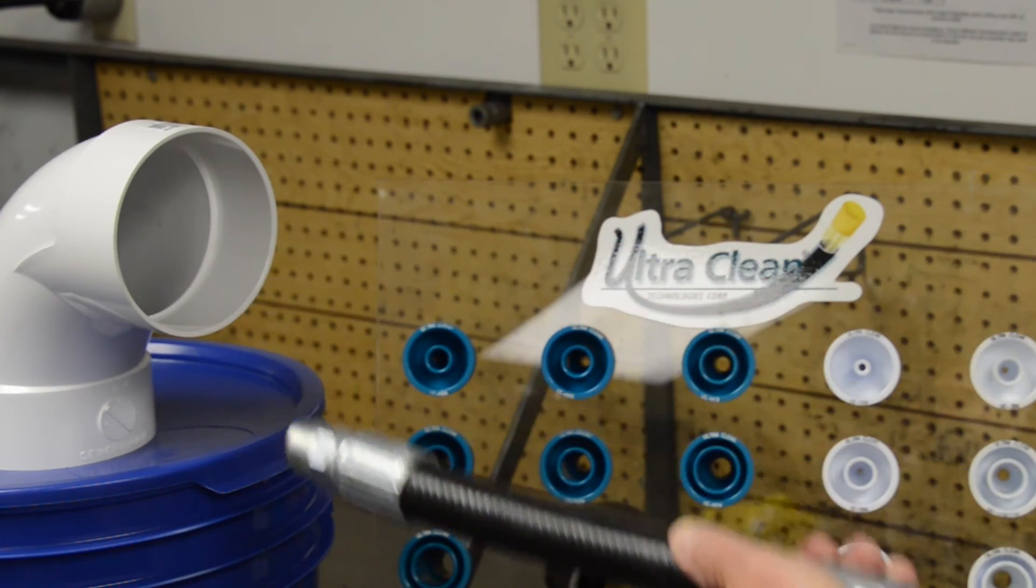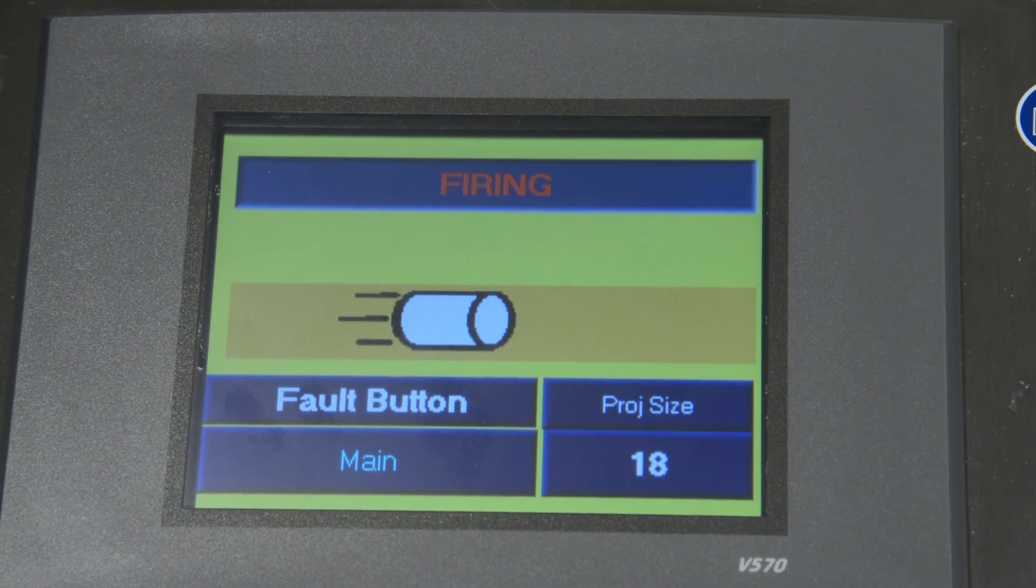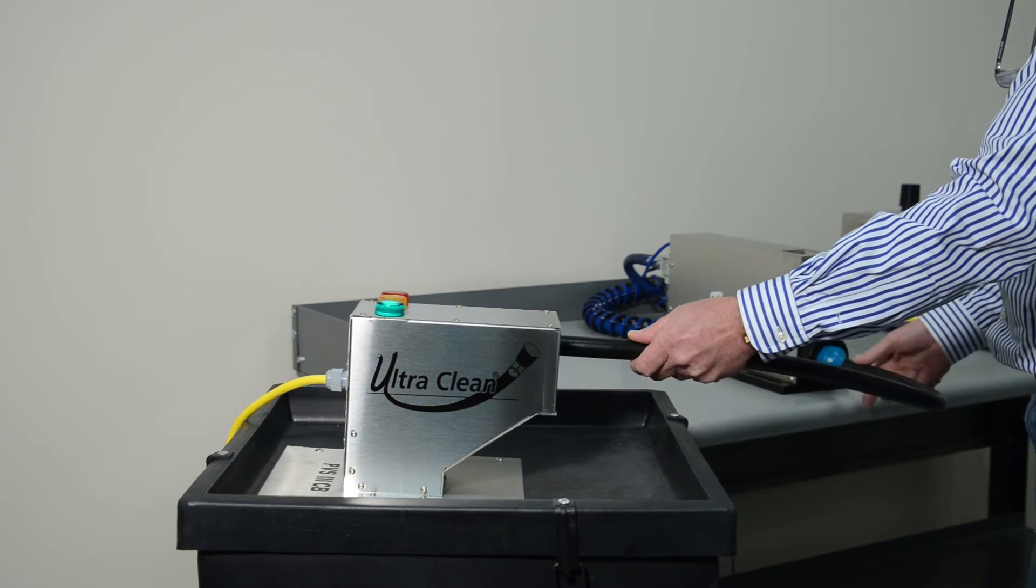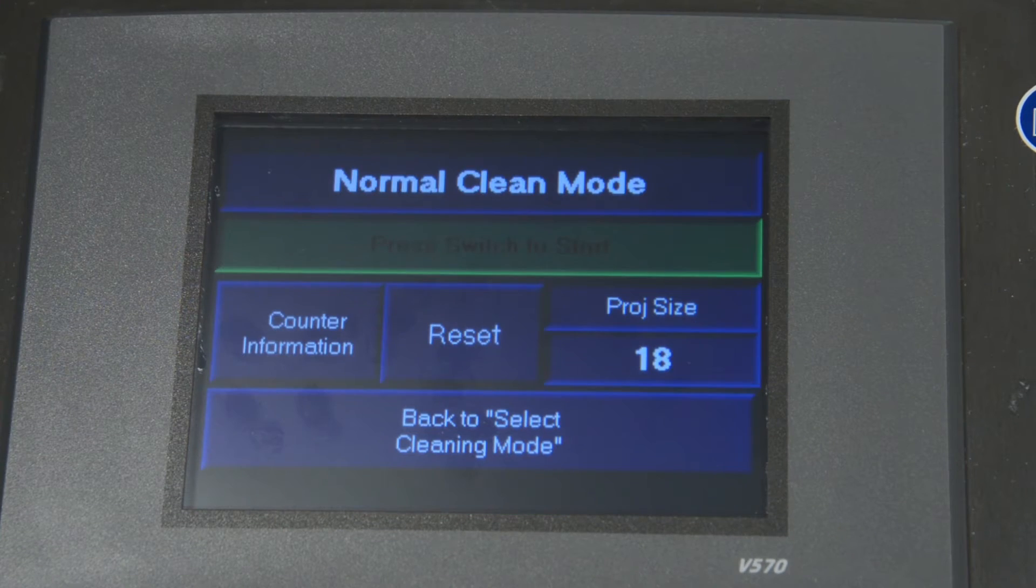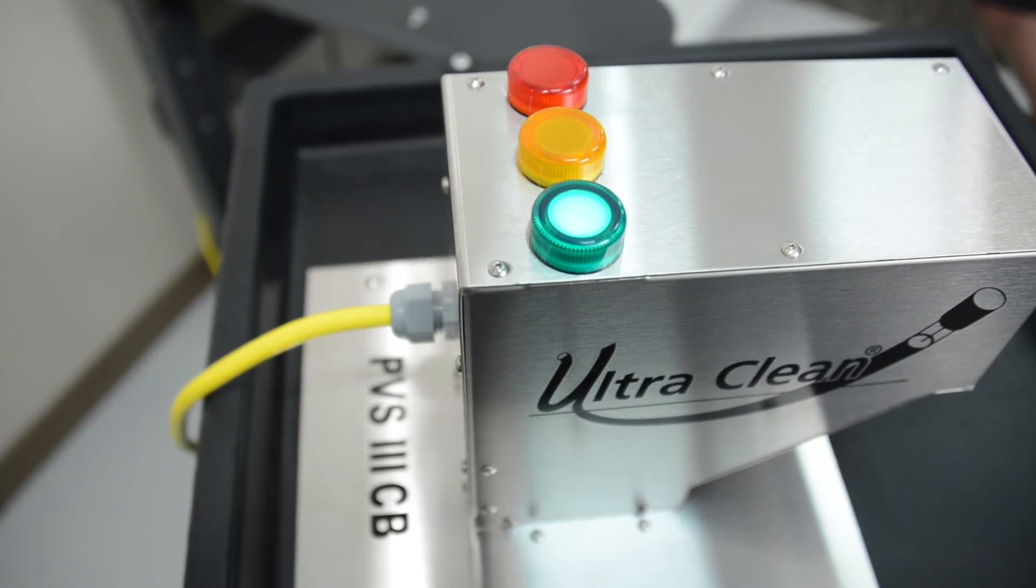Immediately after the firing cycle is initiated, a yellow screen appears with a projectile firing animation. After projectile verification, the Normal Clean mode screen reappears and the system is ready to fire another projectile.